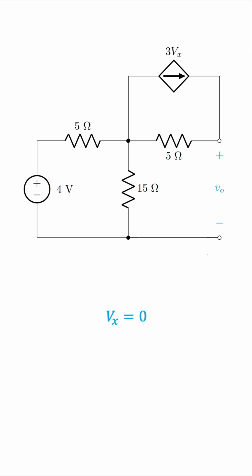But then wait. We said this is the voltage-controlled current source over here with current rating 3 times Vx, and if Vx is 0,